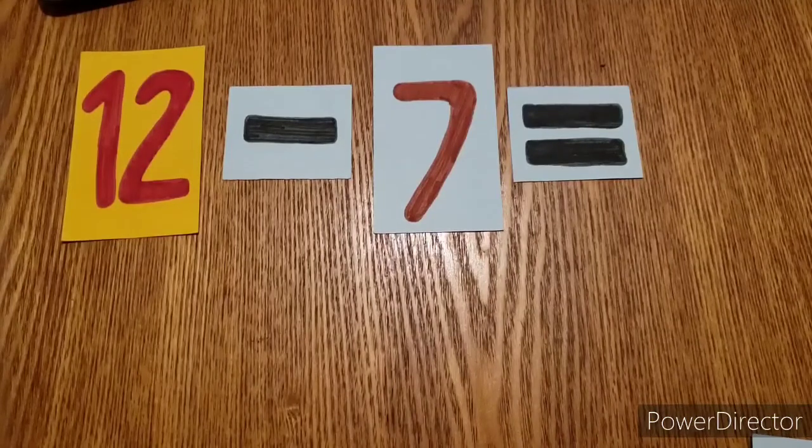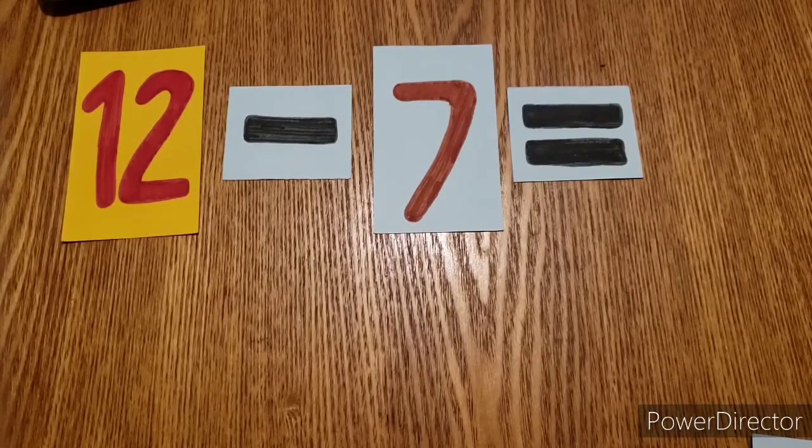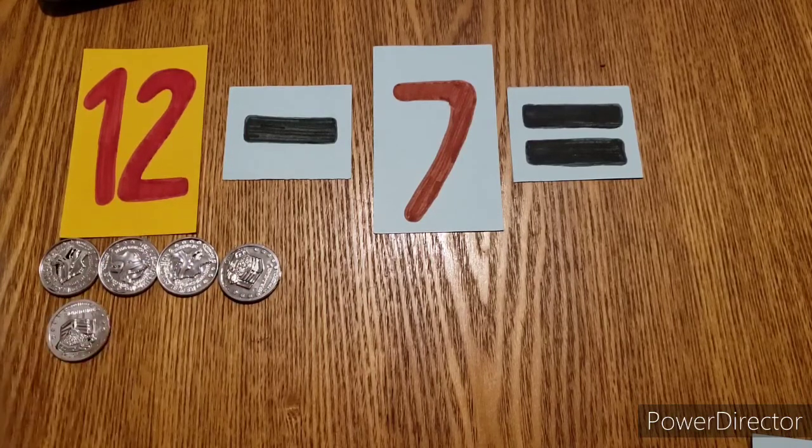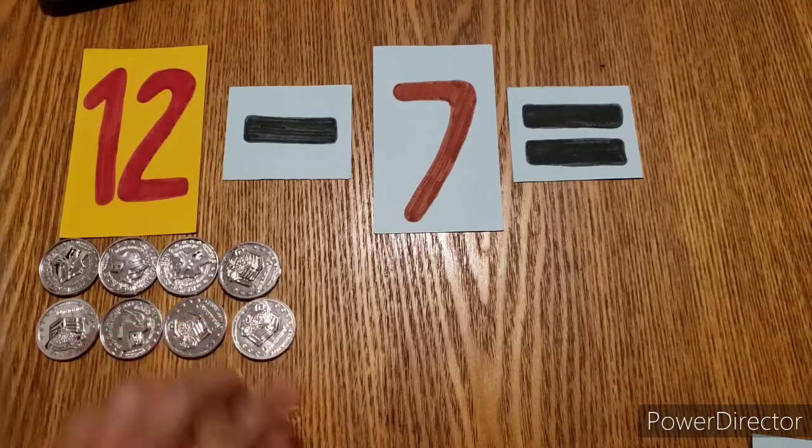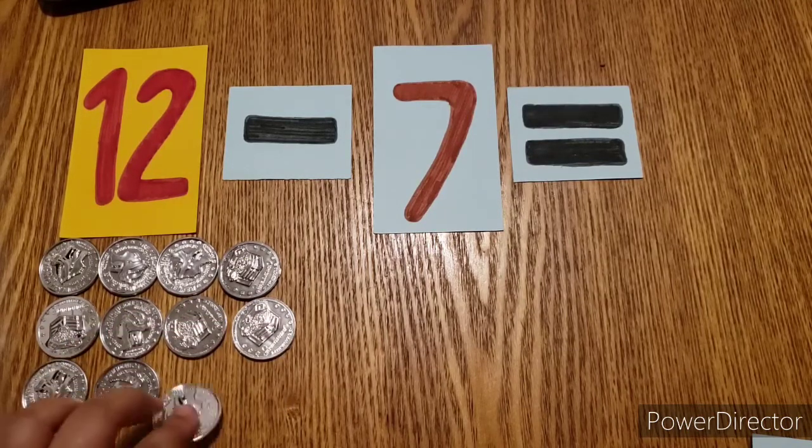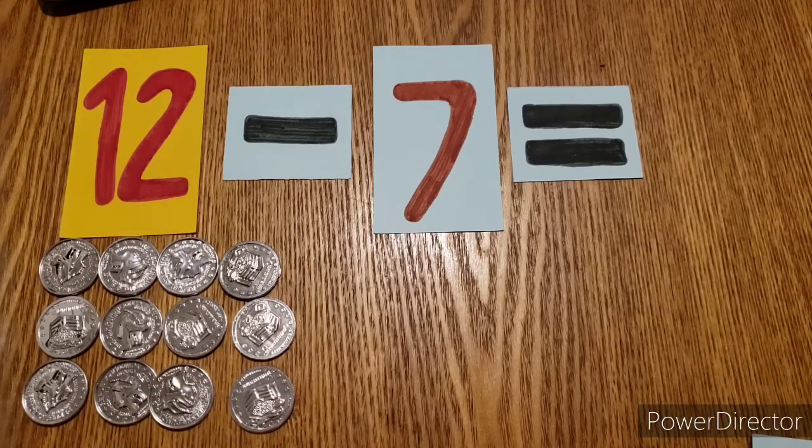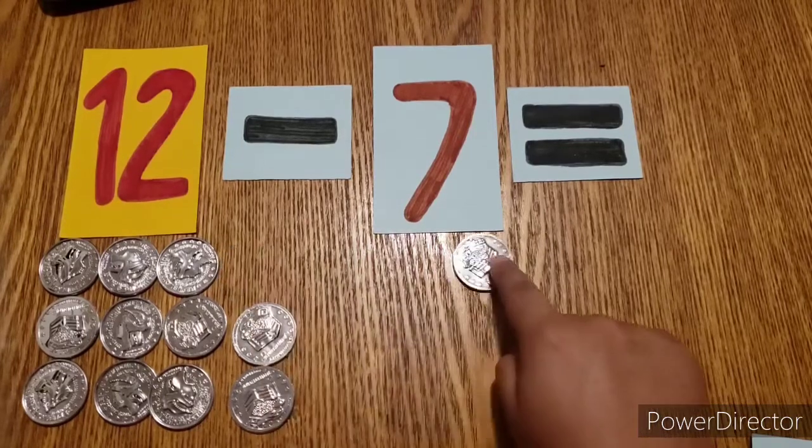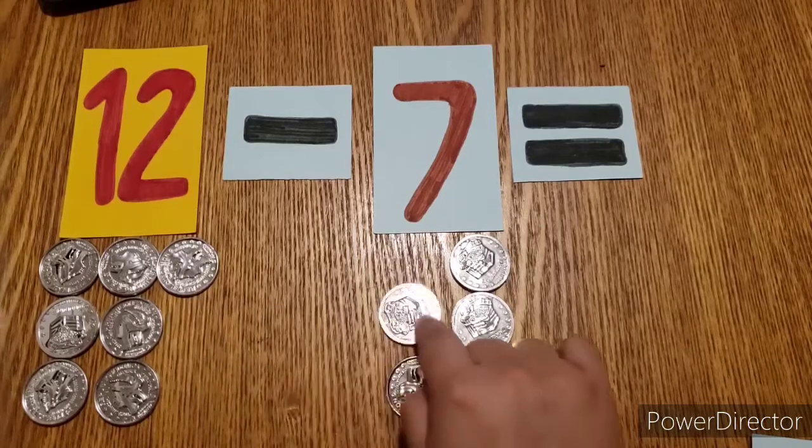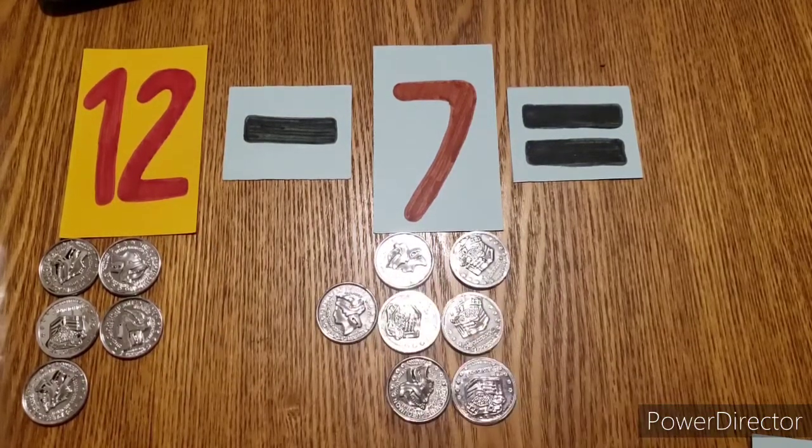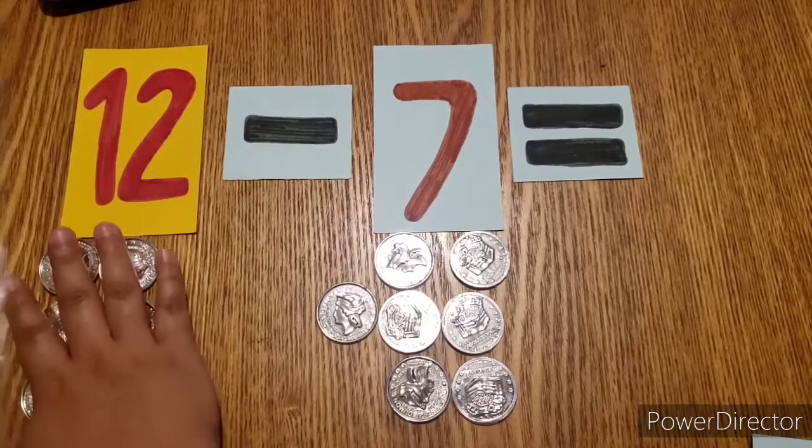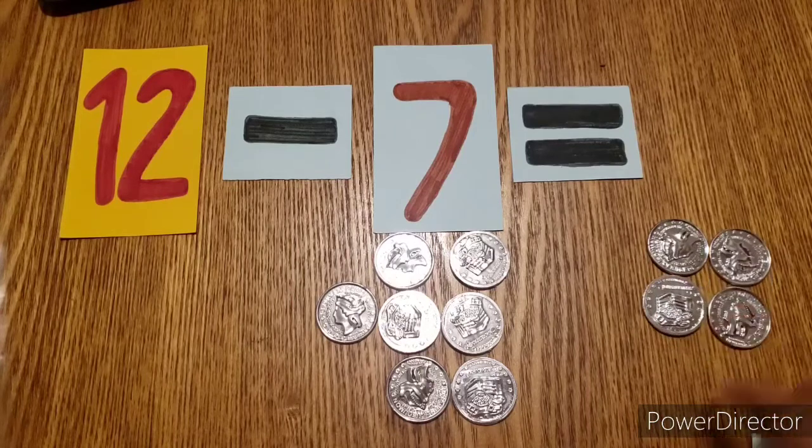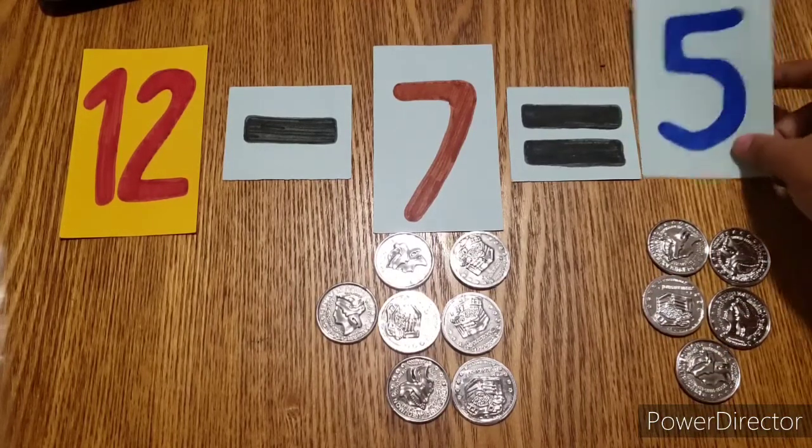Let's take a look at this first problem. We have 12 minus 7. So we have 12 coins: 1, 2, 3, 4, 5, 6, 7, 8, 9, 10, 11, 12. Now we want to subtract 7. So when we say subtract we want to take away. So let's take away 7 coins: 1, 2, 3, 4, 5, 6, and 7. Now that we took away 7 we want to see how much we have left. And that would be the answer. We have 1, 2, 3, 4, 5. So 12 minus 7 equals 5.